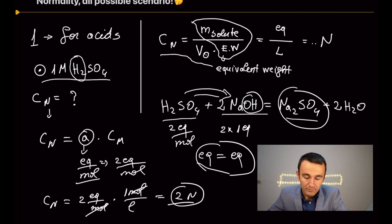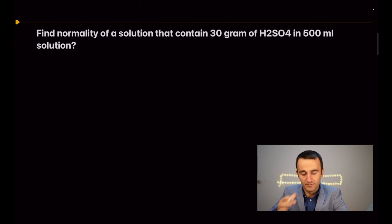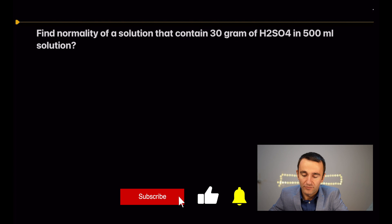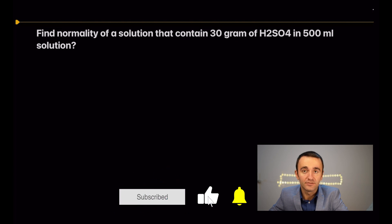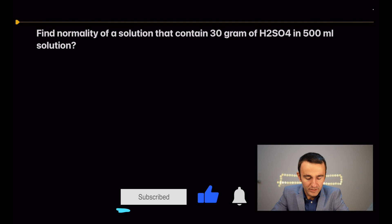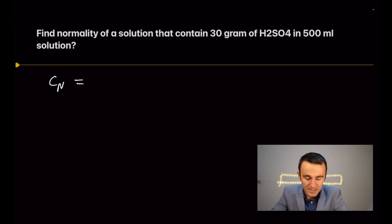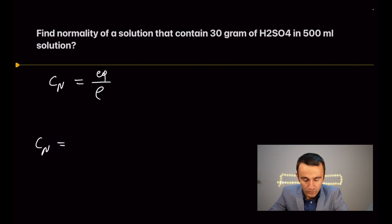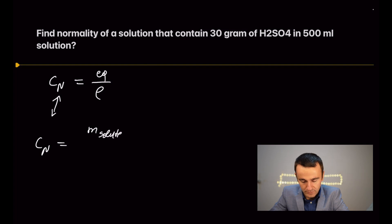Take a look at this example: find the normality of a solution that contains 30 grams of sulfuric acid in 500 mL of solution. Normality equals equivalents per liter, and we can also use the formula: mass of solute divided by volume of solution multiplied by equivalent weight.